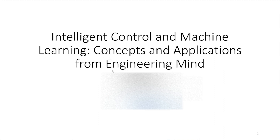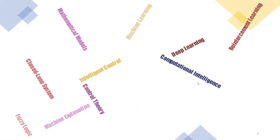I'm H.K. Nance and this is today's topic. I would like to give a great introduction about intelligent control and machine learning — a brief idea about the concept as well as what kind of applications machine learning and the control field can be used for. On this page, I'm highlighting what kind of keywords can be found in machine learning as well as in the control field. For example, we have fuzzy logic, the control system, machine explanation, intelligent control, machine learning, deep learning, and so on.